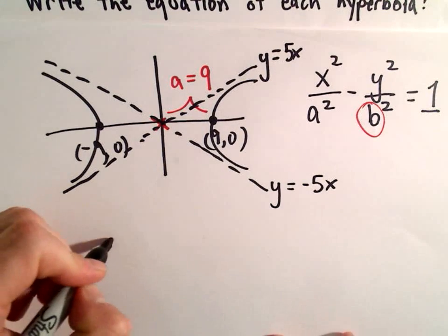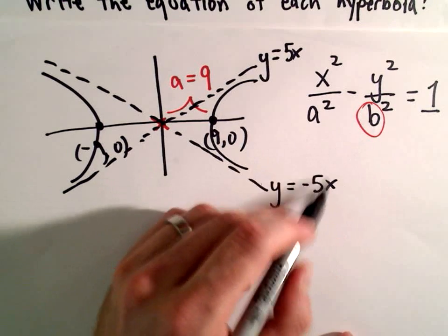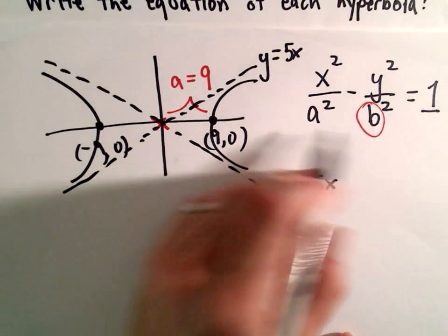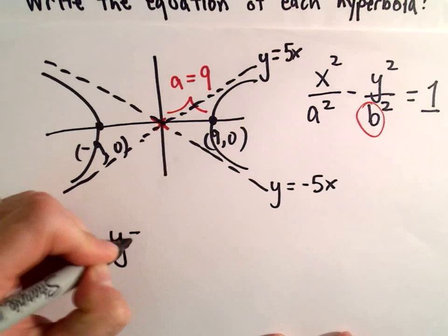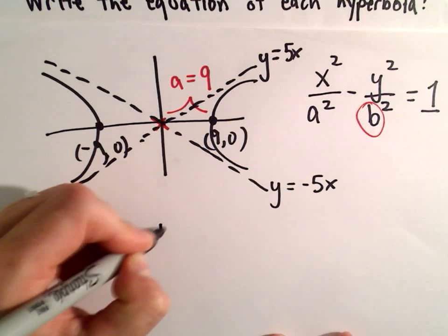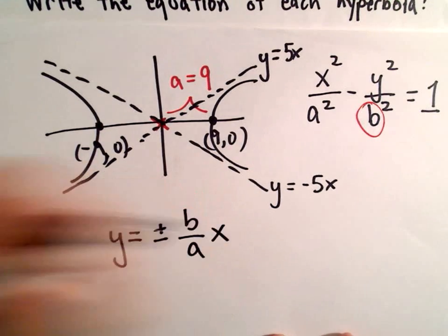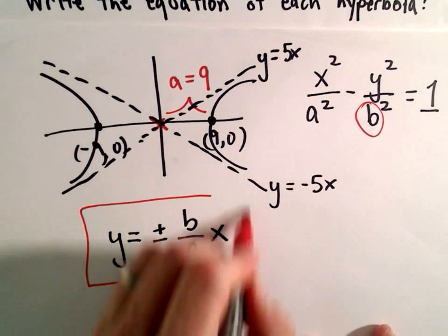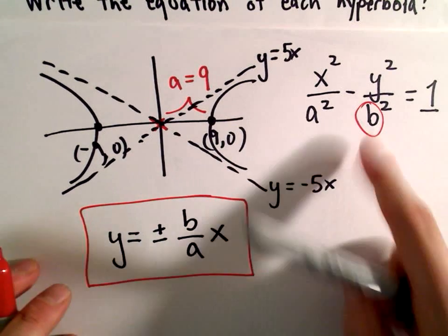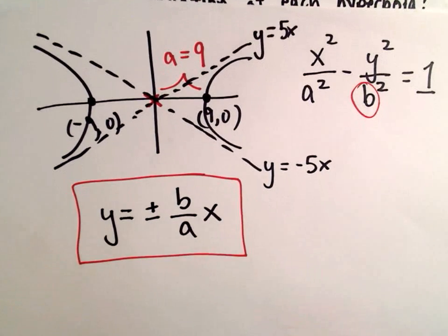What we do, though, the relationship between the slope of these asymptotes, there's a relationship between the slope and our b and a value, and the relationship is that our asymptotes are going to be of the form y equals positive and negative b over a times x. So this is going to be an important little formula because we're trying to figure out what b is, we know what a is, and that'll allow us to do this.